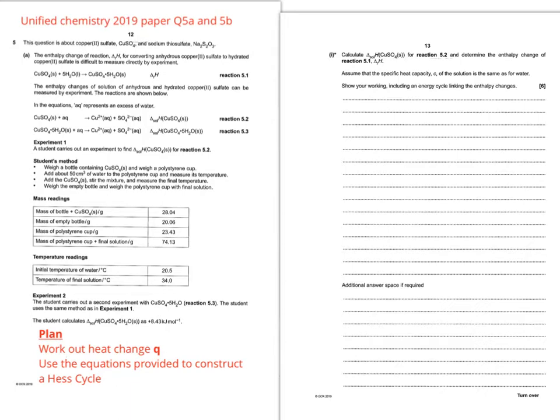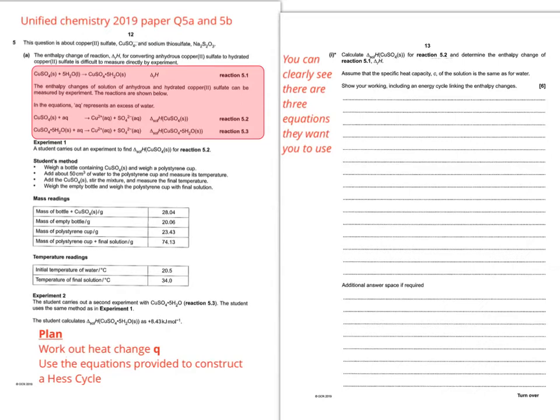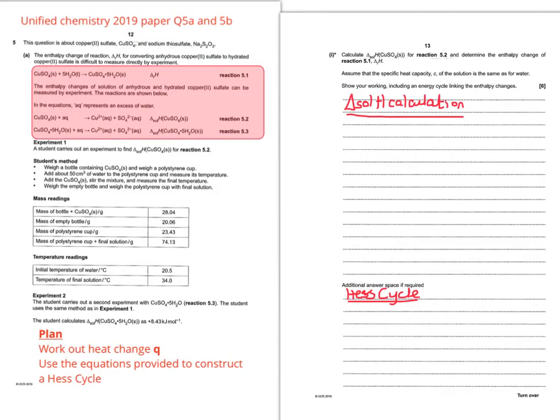So before I start one of these, I always do a bit of a plan so I have something to think about and a kind of template to work through. So it says calculate delta sol H for copper sulphate solid for reaction 5.2 and determine the enthalpy change of reaction delta RH. So if we look at the information we're given, you can see that they've got three equations they want you to use. So you need to use those equations to construct your Hess cycle. It says including an energy cycle linking the enthalpy changes.